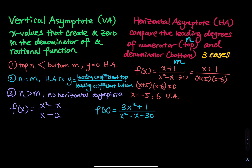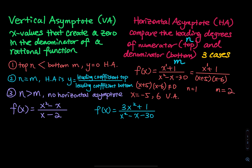How about the horizontal asymptote? The biggest degree in the numerator is n equals 1 — the first power. The biggest degree in the denominator is 2, so m equals 2. The top is less than the bottom, so y equals zero is the horizontal asymptote.